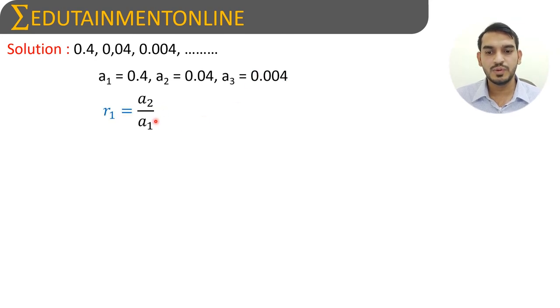The first ratio, a₂ by a₁, equals 0.04 by 0.4. We can simplify: 0.04 is 0.1 times 0.4, and 0.4 is 10 times 0.04, so 1 by 10 equals 0.1.